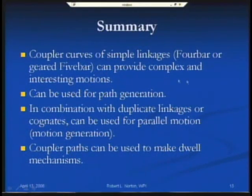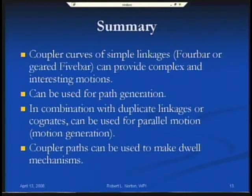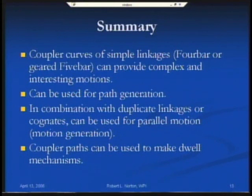Here's a summary of what we've talked about today: coupler curves of four-bar and geared five-bar linkages can provide very complex and interesting motions. We can use those for path generation — moving a point along a desired path — though at that point we're not considering the orientation of the link. That can be addressed by introducing cognate linkages to achieve parallel motion, where a line in the plane follows the coupler curve path. Coupler paths can also be used to make dwell mechanisms, which is the subject of another tape. Thank you — we'll see you on the next video.